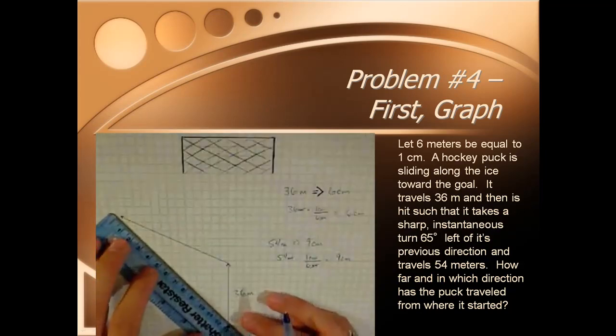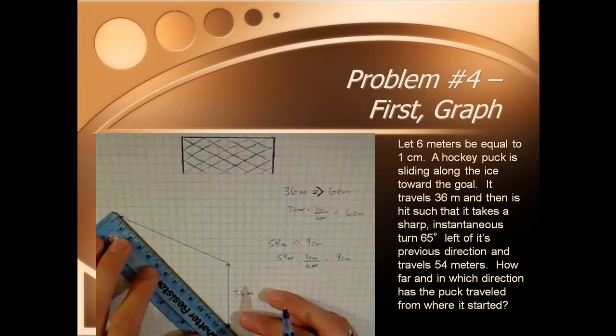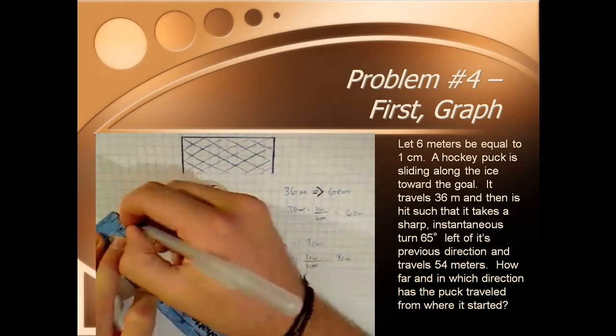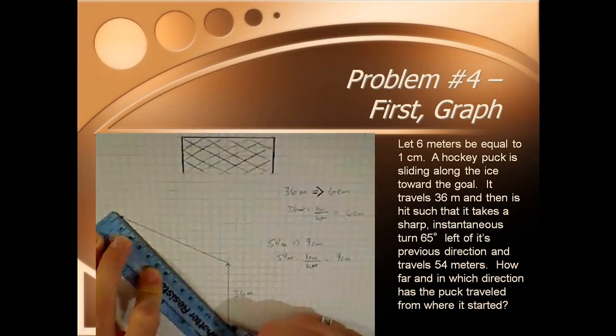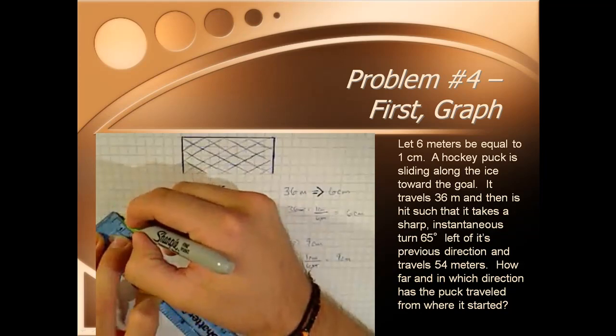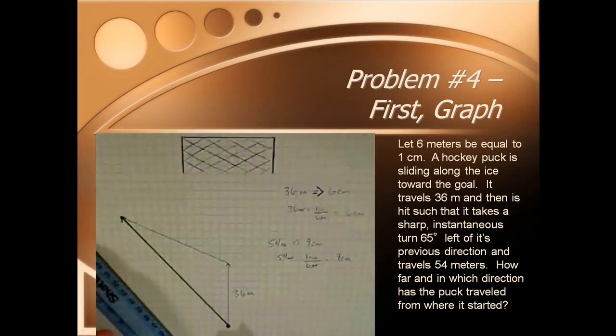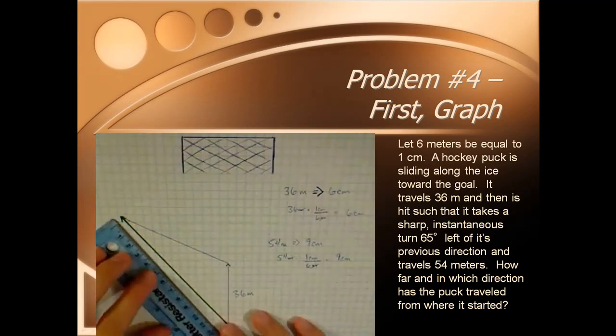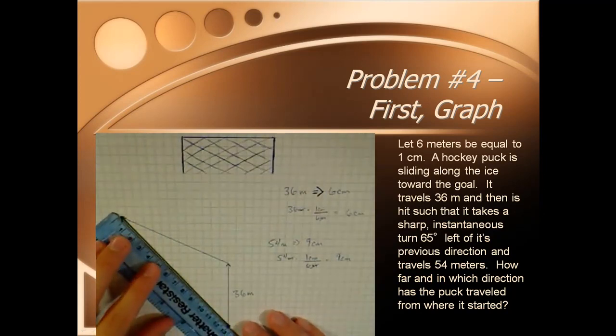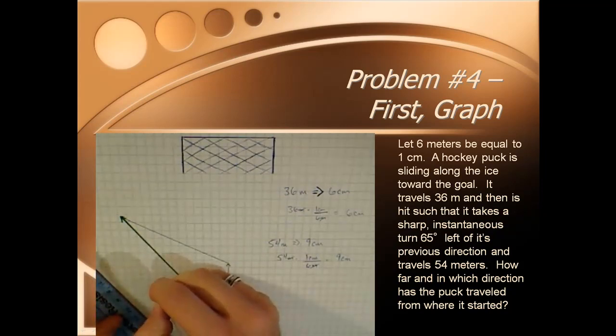Now the resulting displacement, the resultant, is going to be this arrow right here, from the tail of the first one to the tip of the last one. I'll go ahead and mark that in a different color so it's more clear. This will be my resultant, and then I'll go ahead and measure my resultant. I'm going to get about 12.8.